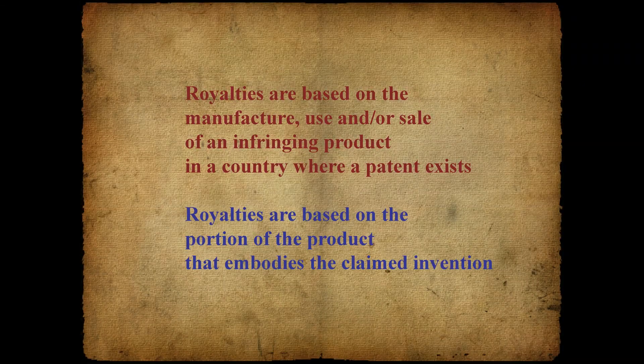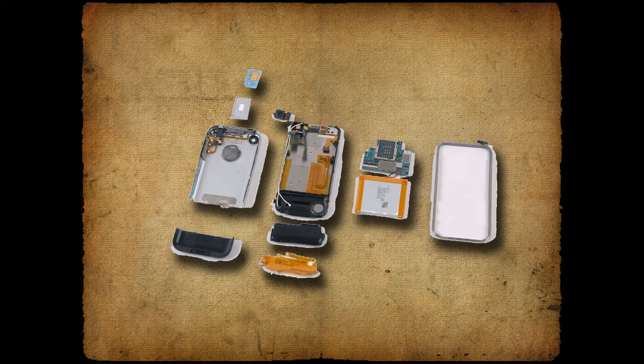The second point is that royalties are based on the infringing portion of the device. This has become a more active area of the law recently, as any particular product involves so many different patents. For example, if a patent relates to an improved GPS antenna on a cell phone, the basis on which the royalty is calculated will be on the value of that antenna or the value of the GPS system to the whole phone, not on the entire cell phone.